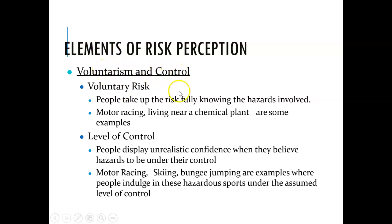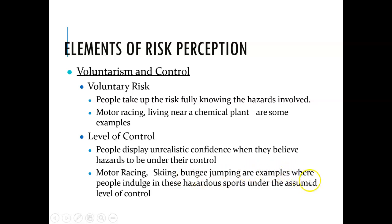The first element is voluntarism. Voluntary risk means people take up the risk fully knowing the hazards — they know the risk but do it intentionally, in order to prove something. In terms of level of control, people believe risks need to be under their control. A good example is hazard sports, taken under an assumed level of control.